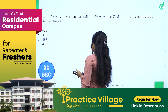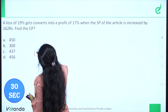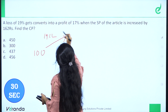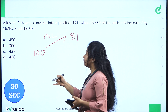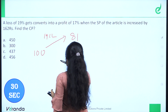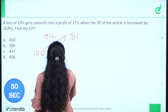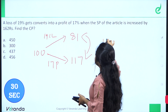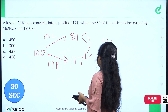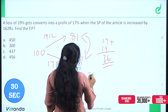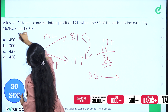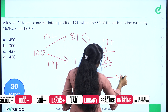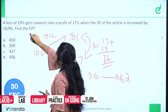If we assume the Cost Price as 100 units, at a 19% loss we get 81 units, and at a 17% profit we get 117 units. The difference between 117 and 81 is 36 units, which equals 162 rupees.